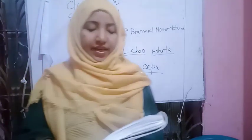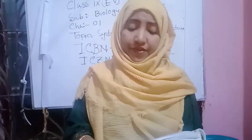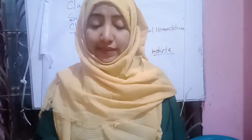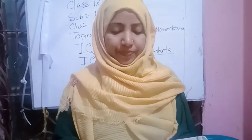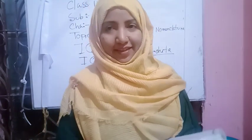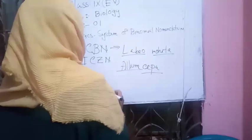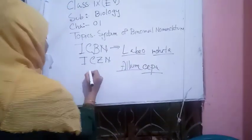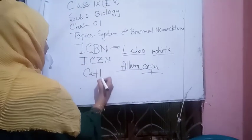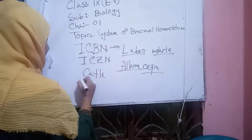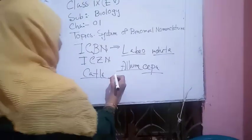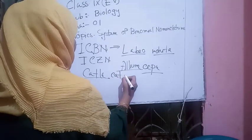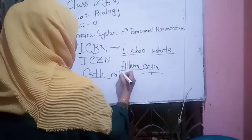Rule six: when the scientific name is handwritten, its two parts should be separately underlined. For example, Allium cepa — Allium is underlined separately, and cepa is underlined separately. Similarly Catla catla — Catla is underlined and catla is underlined.